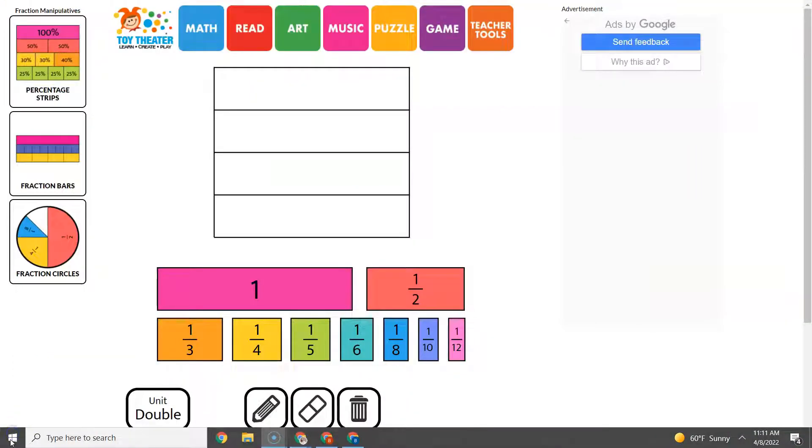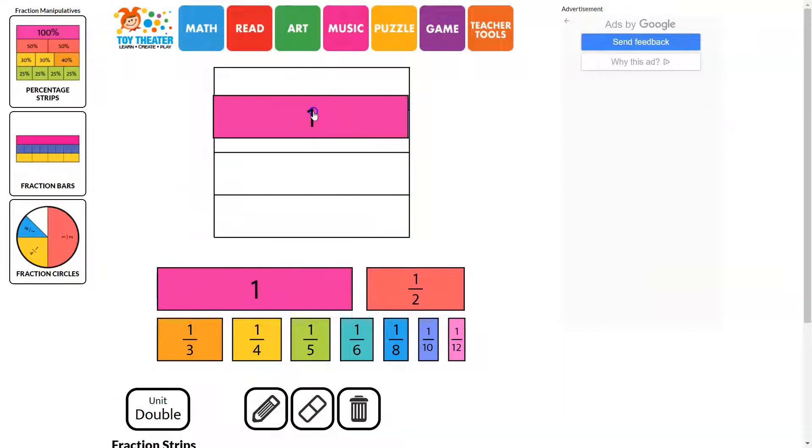It's like real-life fraction bars. You can show that you have one whole, and that equal to one whole is two halves, and that equal to two halves or one whole is four fourths, and so on.